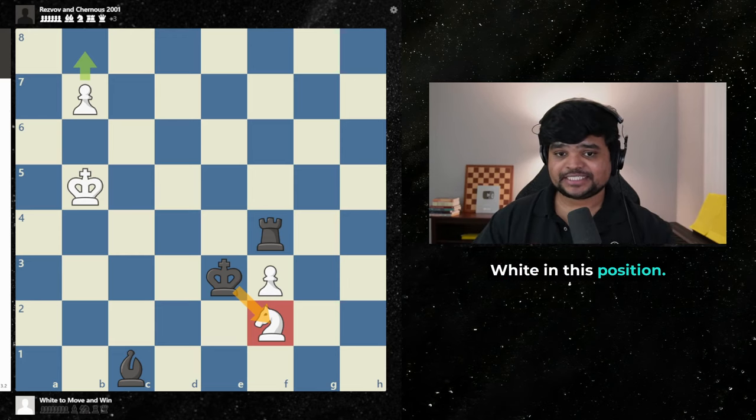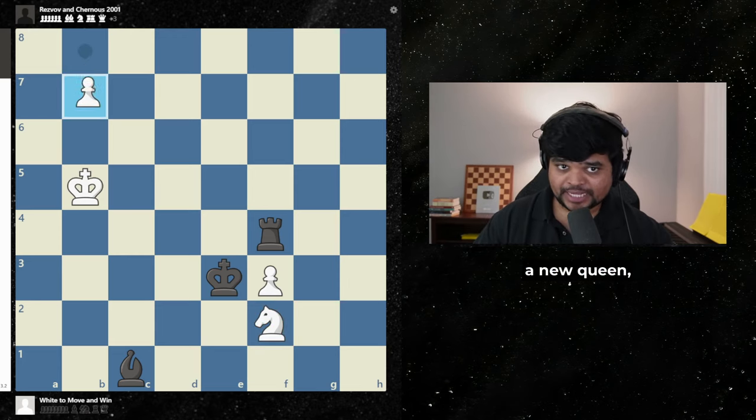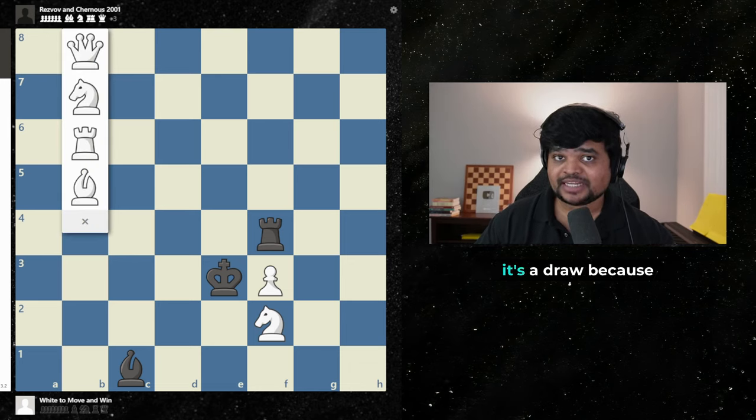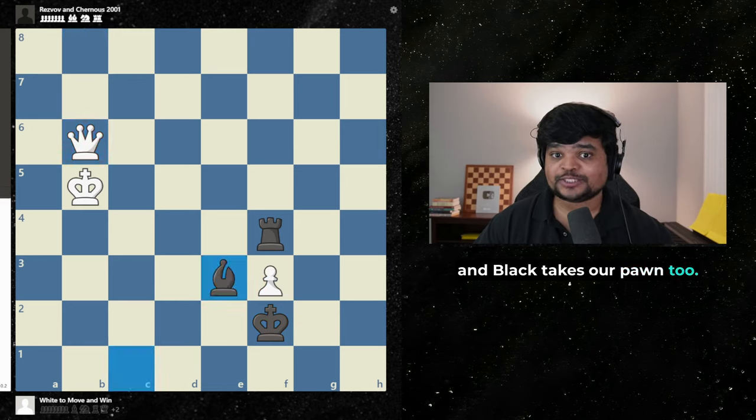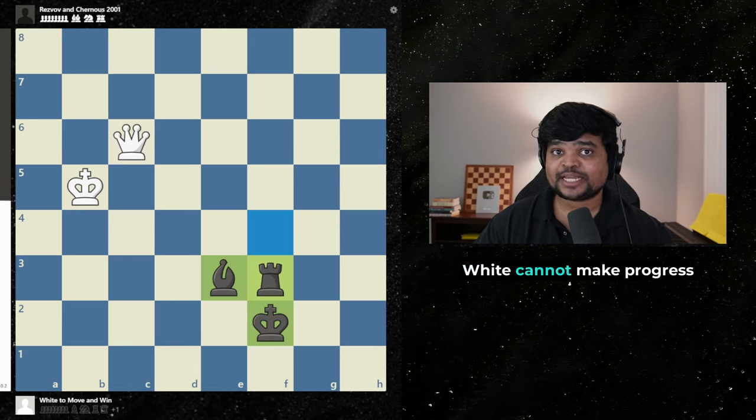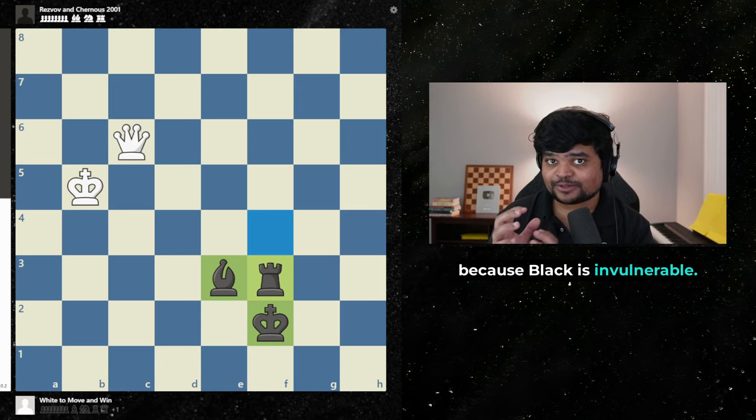Imagine you're playing white in this position. White's about to make a new queen, but if you do it right now, it's a draw because black takes our knight and black takes our pawn too. And this position, white cannot make progress because black is invulnerable.